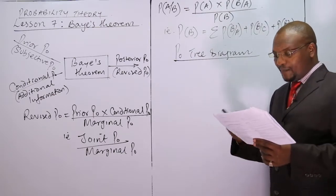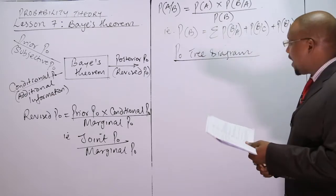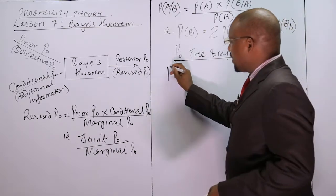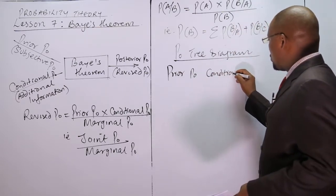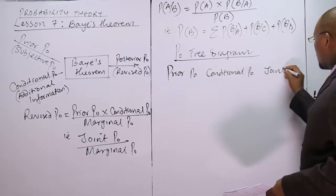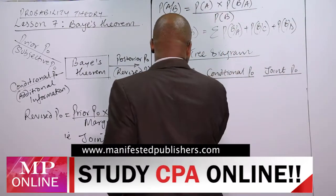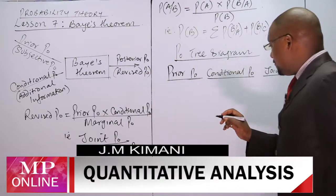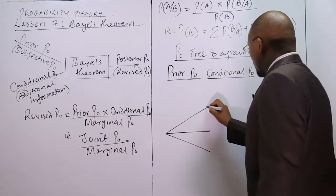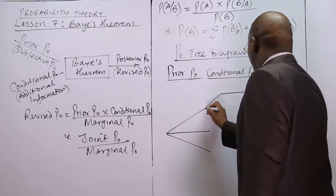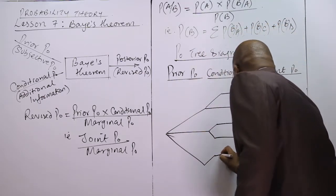The second stage covers the information after auditing — some accounts were found to have errors, so we have two branches: error and no error. I'm going to draw and label the diagram: the first stage has the prior probability, the second stage has the conditional probability, and then we have the joint probabilities. For the prior we have Othiambo, Koech, and Moai; for the conditional probability we have error and no error for each branch.